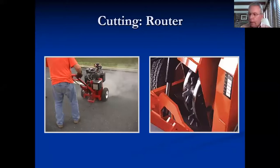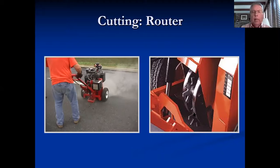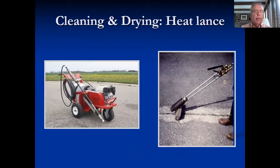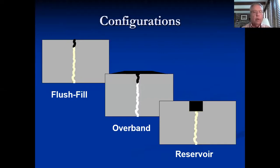There's a router — that's one way to cut. A common way, you can see a portable machine here on the left, and here's the business end — this is an asphalt router. You can route half inch, three-quarter inch, or an inch, depending on the circumstances and the blade that you have. You're going to want to clean out the crack — blowers, heat lance. Heat lances are very commonly used and are a very good tool. As far as configurations, we're going to look at flush fill, overbanding, and reservoir.